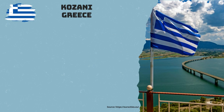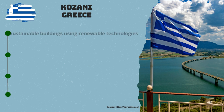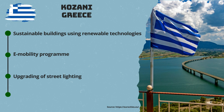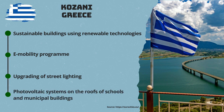Kozani, Greece: The Municipality of Kozani in Greece was strongly coal-based, but has implemented a program to remain the energy center of Greece by relying on renewable energy. Initiatives include sustainable buildings with the construction of educational and school buildings using renewable technologies such as geothermal, photovoltaic energy, and district heating; an e-mobility program using electric vehicles for municipal services and an autonomous solar charging station; upgrading of street lighting using LEDs, dimming, and digital systems to save energy; and installation of 22 photovoltaic systems on the roofs of schools and municipal buildings.